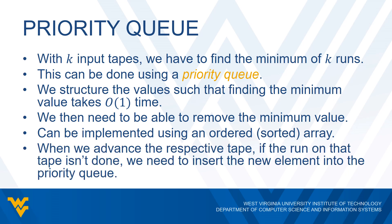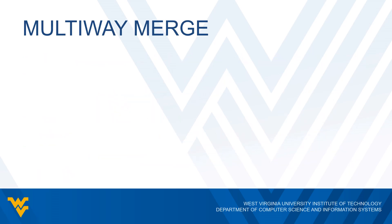Whenever we advance the respective tape, if the run on that tape isn't done, we take the new element on that run and add it to the priority queue. That queue takes care of giving us the minimum value. We pick it, add it to our output tape, and repeat. So instead of just merging two runs onto another tape, we can have K runs and merge them together into a single tape, using the priority queue to find the minimum value each time.